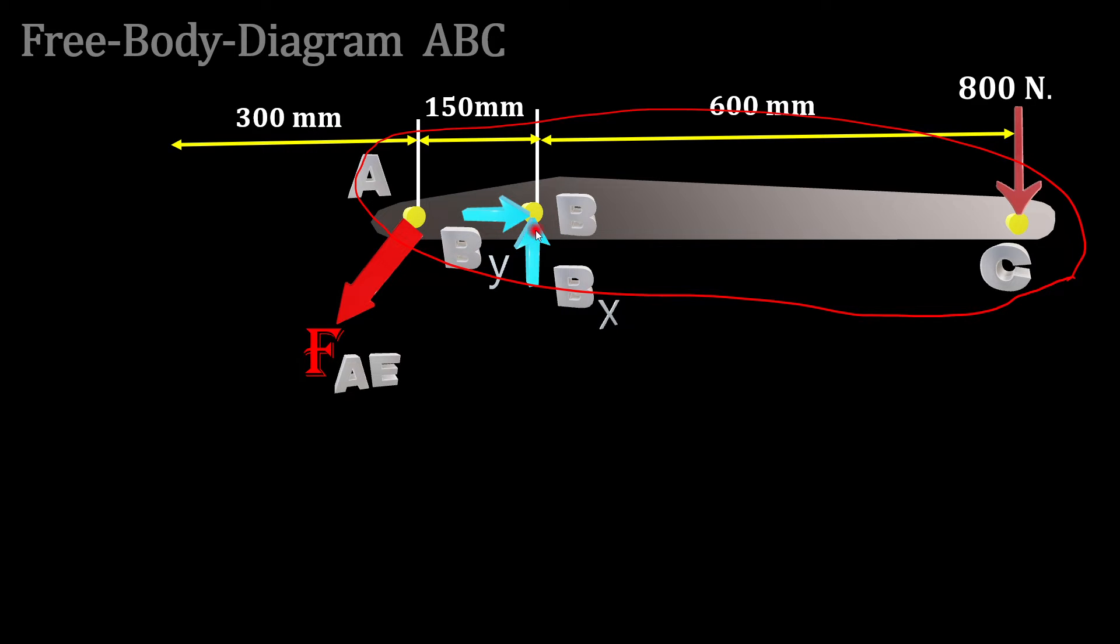At A we have the force of AE which is related to the cylinder AE. To do so, summation of moment about point B goes to zero.